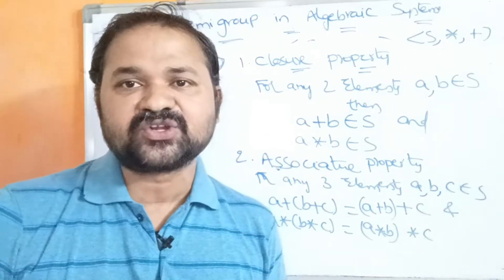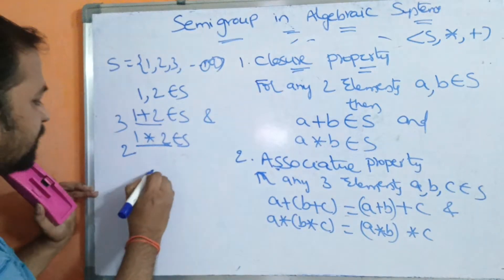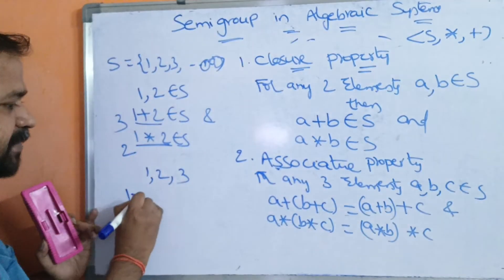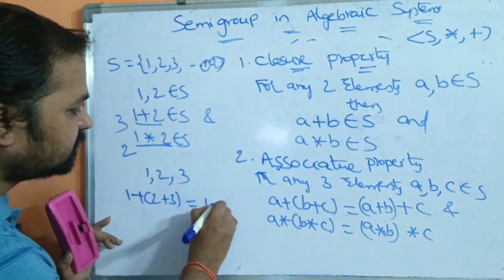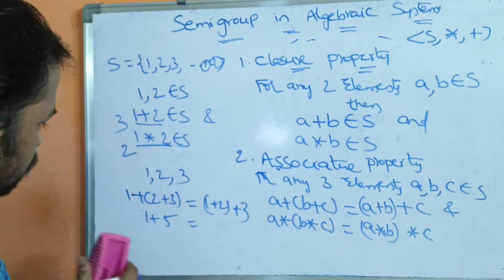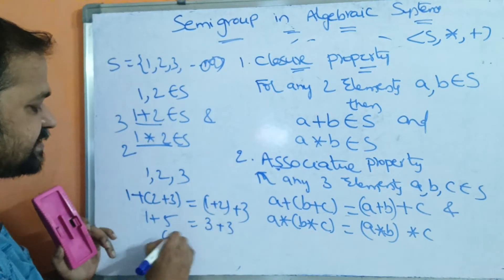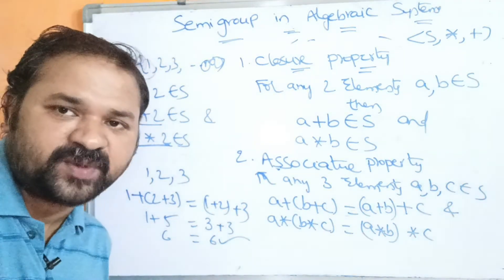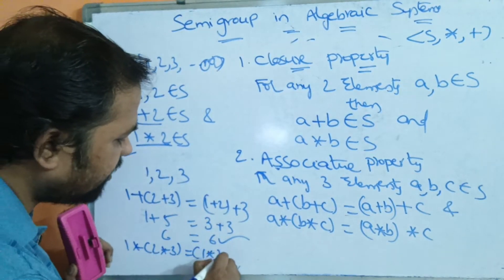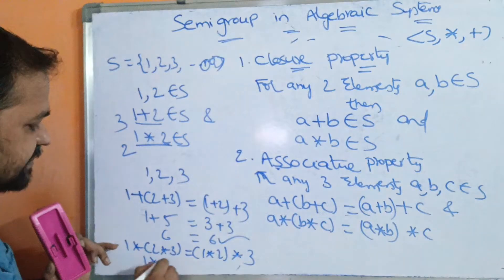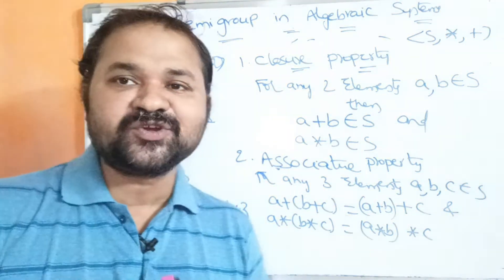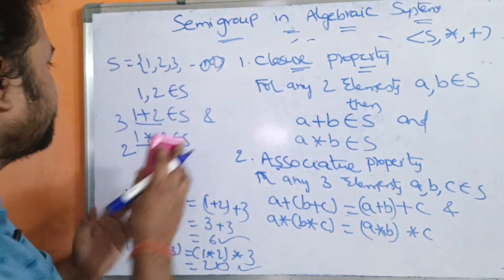Associative property means we have to take three elements from the set. Let us take 1, 2, 3. Then 1 plus (2 plus 3) equals (1 plus 2) plus 3: that is 1 plus 5 equals 3 plus 3, so 6 equals 6. So we can say that associative property is satisfied. Likewise, 1 star (2 star 3) equals (1 star 2) star 3: that is 1 star 6 equals 2 star 3, so 6 equals 6. Condition is true, so associative property is satisfied.